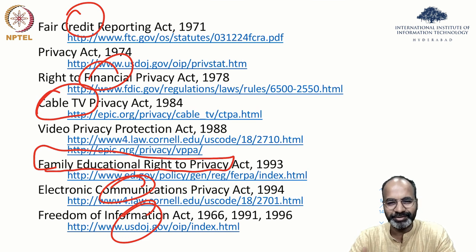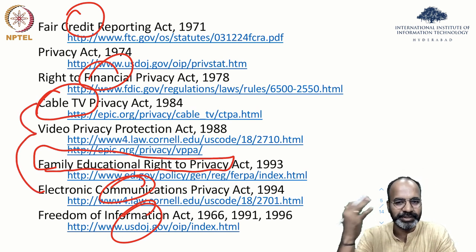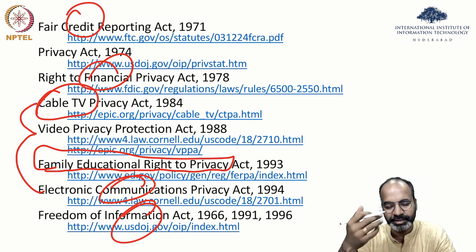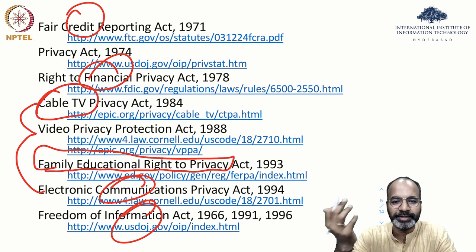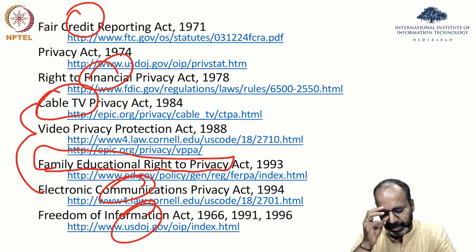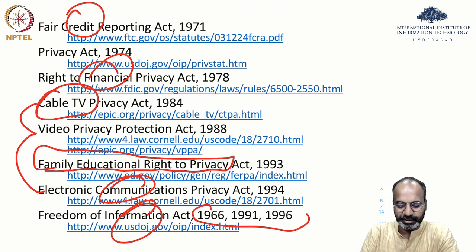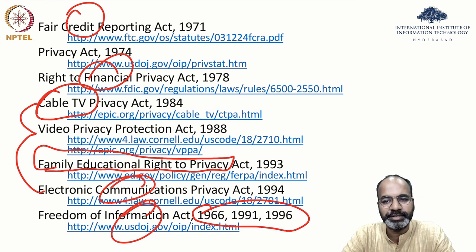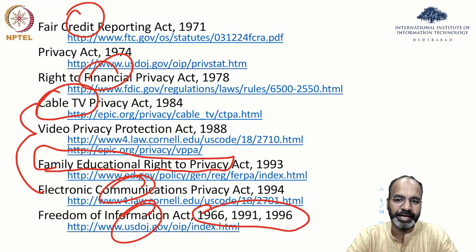Electronic communications, video, cable TV — if you think about it, 15 to 30 years before, these were the main ways of communication and privacy acts were necessary for them. The Freedom of Information Act has had multiple versions, and the entire gamut of this Privacy Act in the US protects US citizens.